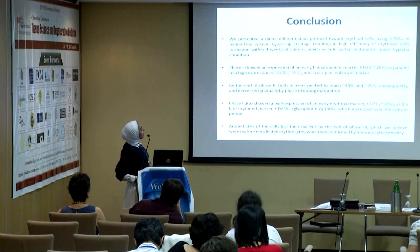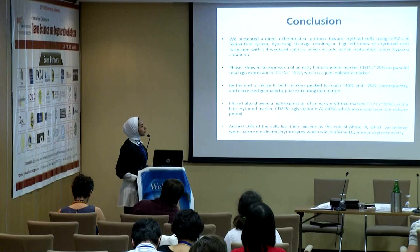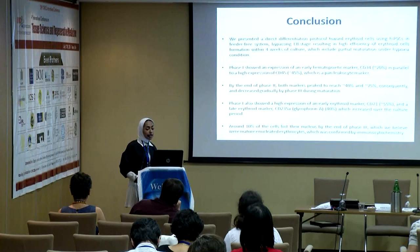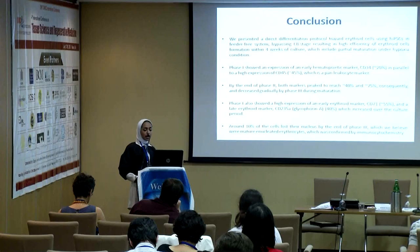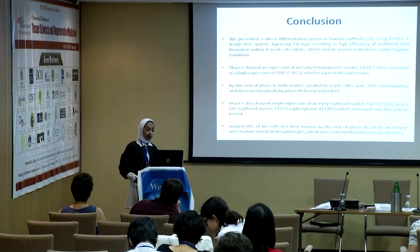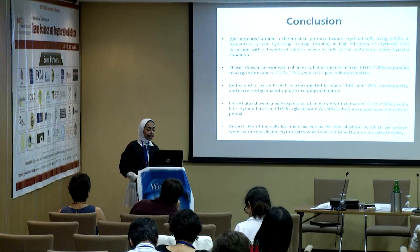In conclusion, we presented preliminary data of a direct differentiation toward erythroid cells using human iPS cells, bypassing completely EB formation and the co-culture step, with partial maturation under hypoxic condition. Phase one showed expression of early hematopoietic markers CD34 and CD45 — the panleukocyte marker. By the end of phase two, both hematopoietic markers peaked, reaching 40% and 75% respectively, and decreased gradually throughout the maturation process.